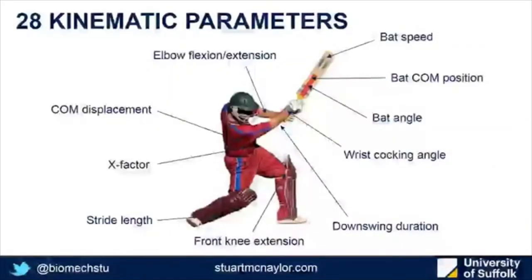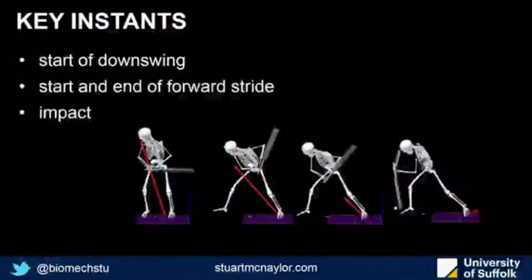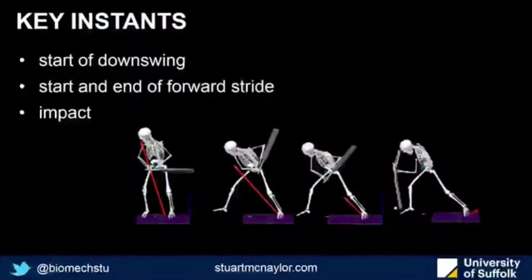We measured 28 parameters — some shown on screen now — such as how much front knee extension they had, what was the bat angle, what was their stride length, their downswing duration, and more. We measured all of these at four time points: the start of the downswing, the start and end of the forward stride, and at impact.